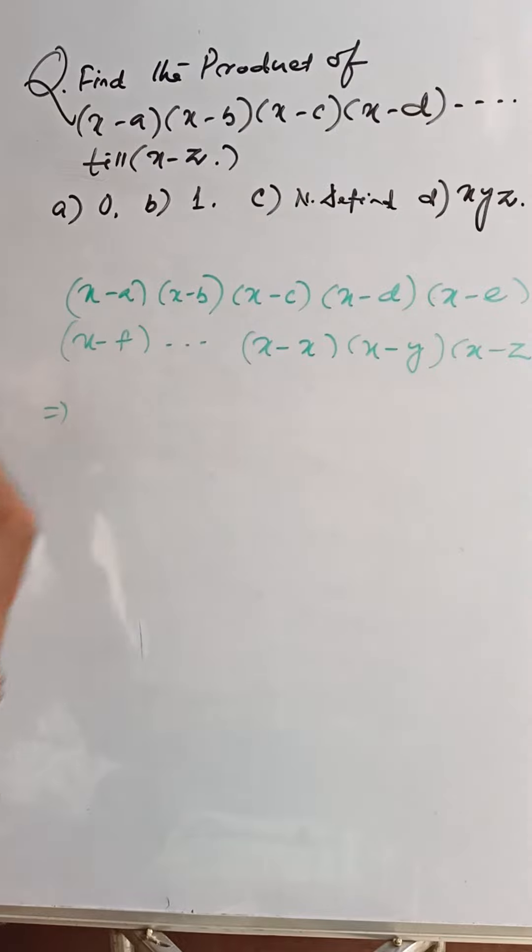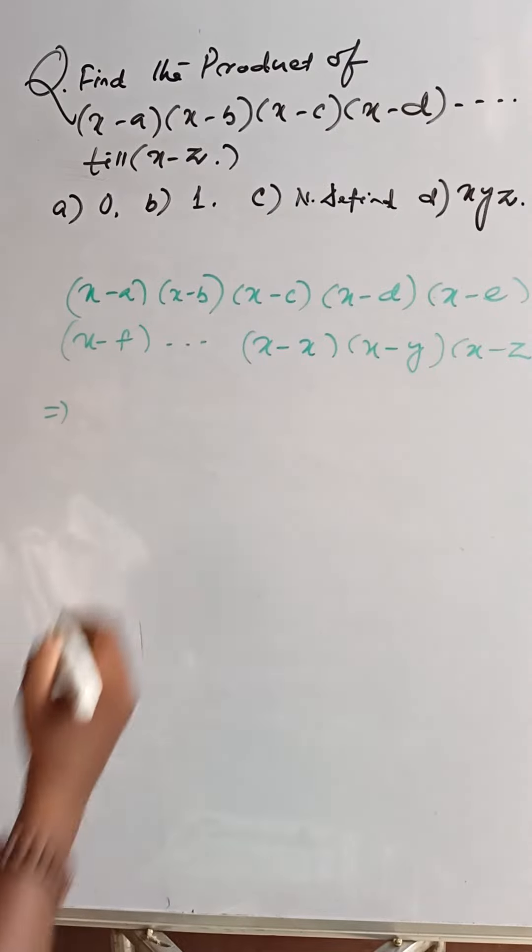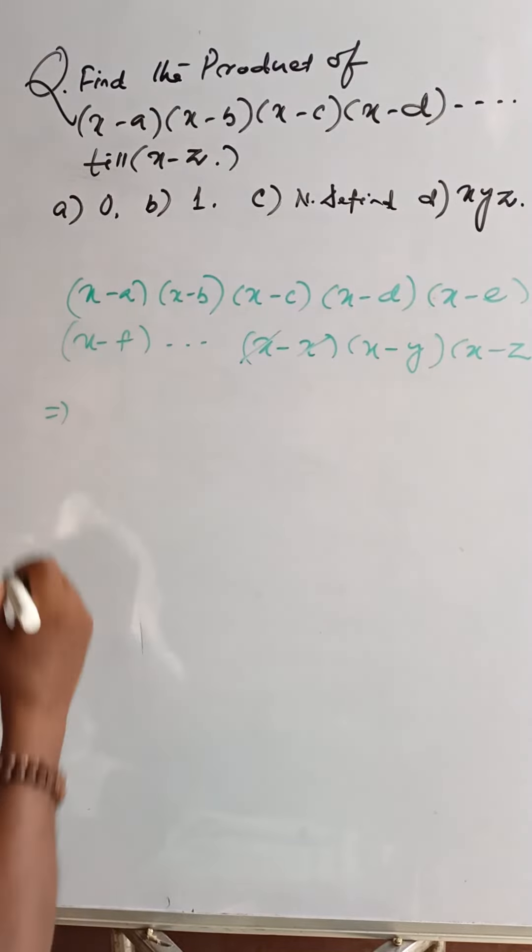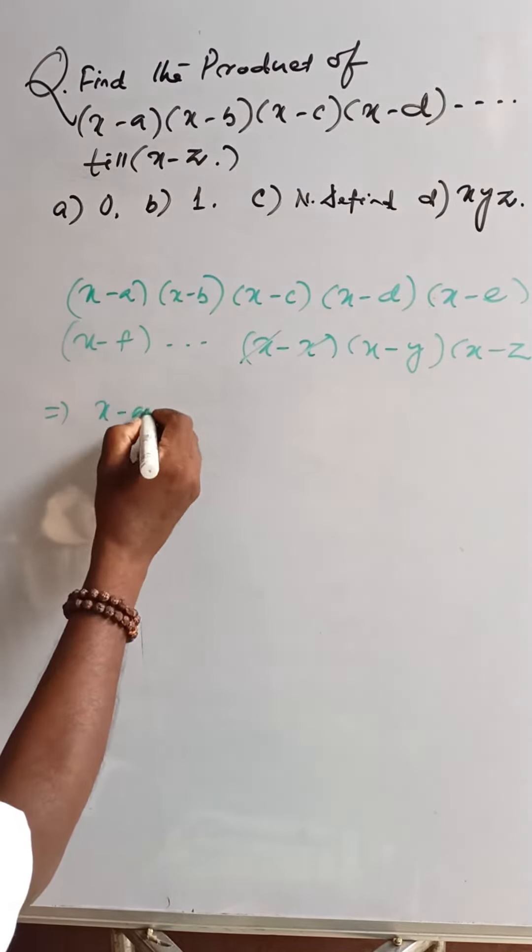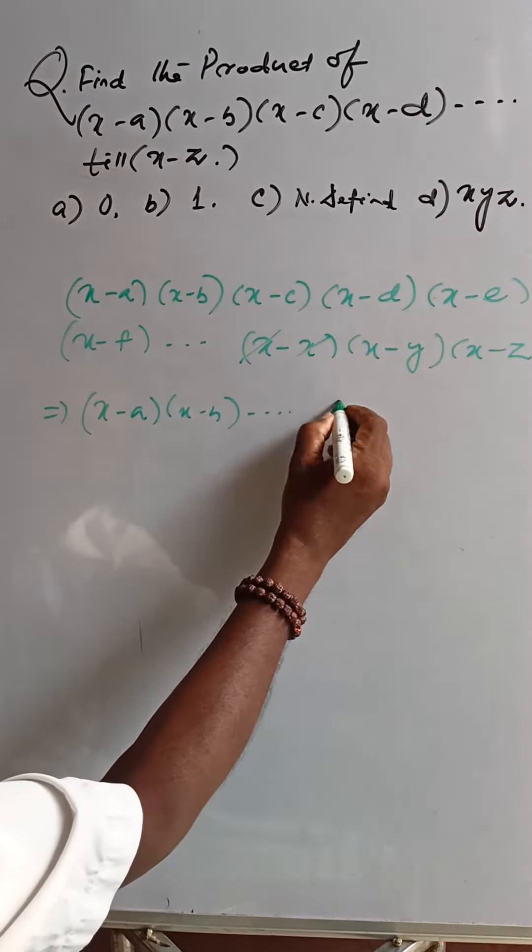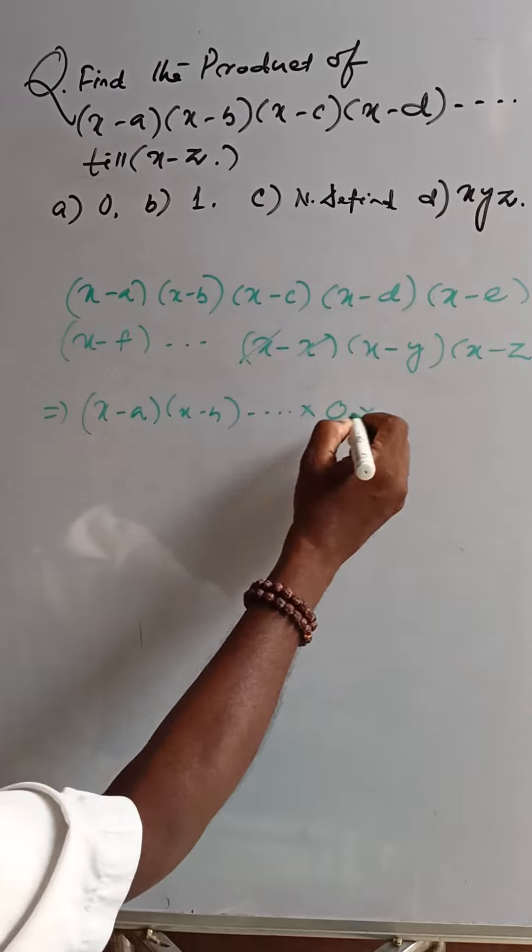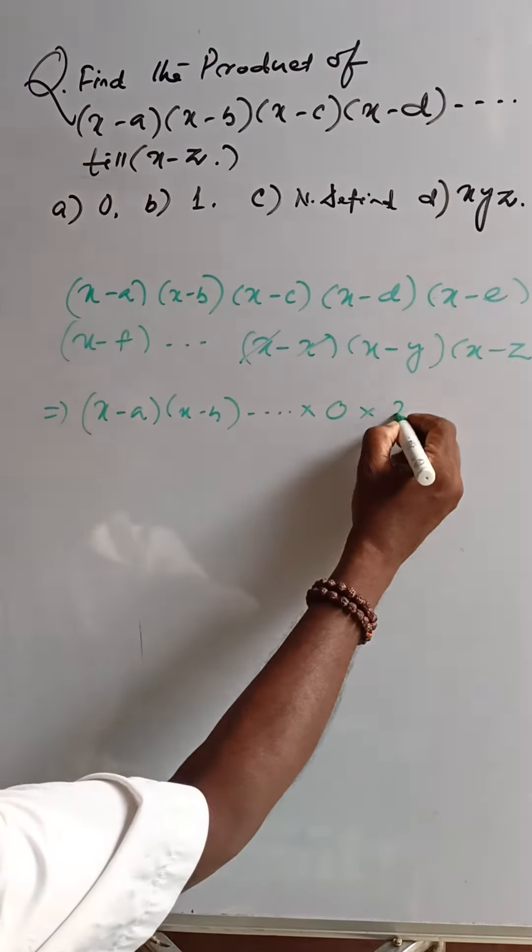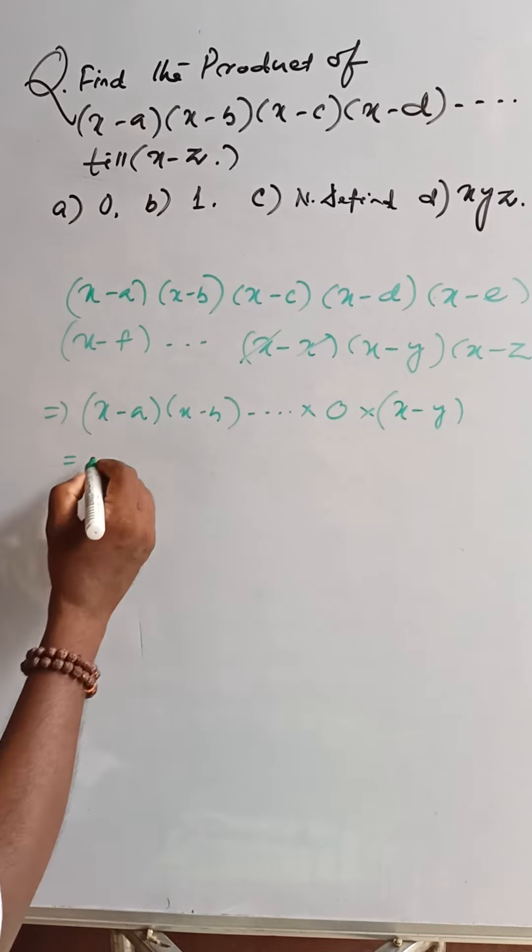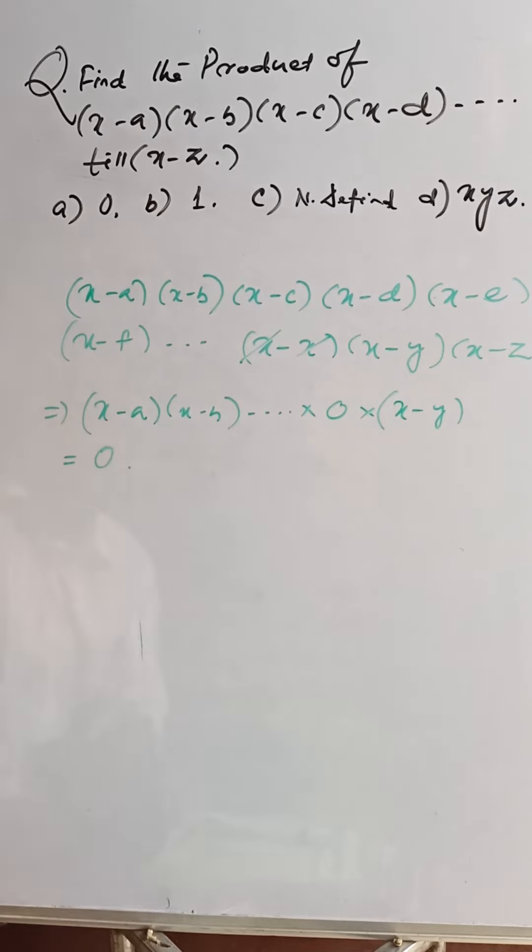So, at the way, we are facing x minus x, that is 0. If x minus a into x minus b and anywhere that is 0 into with all these numbers, the series will be 0, so 0 is the answer.